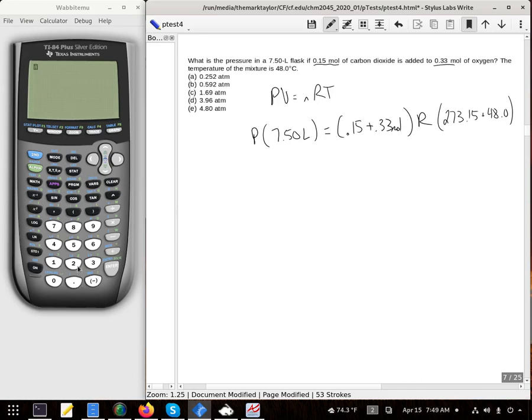So I'm going to do that first. So 273.15 plus 48. This is actually 321.2 so I'm going to take that number, multiply it by the R, 0.08206.